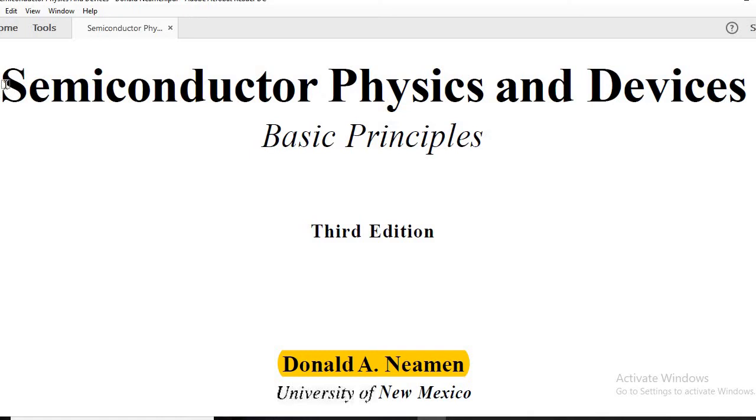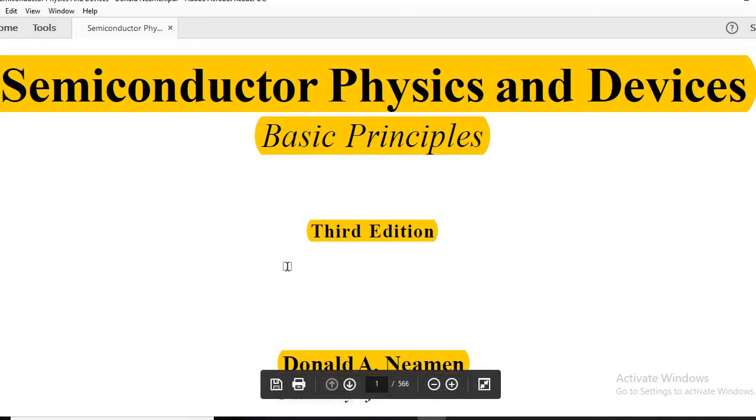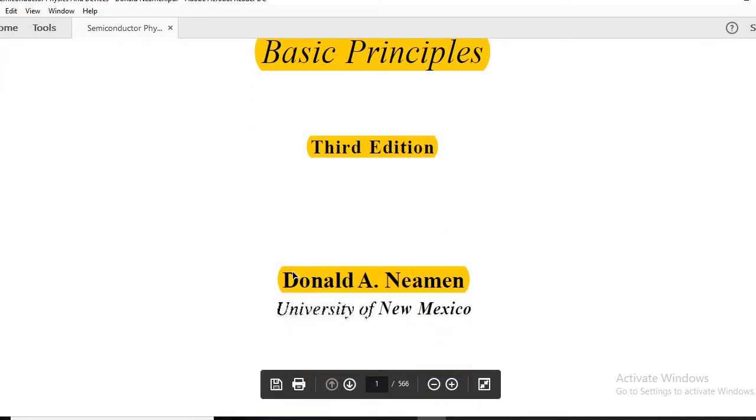You may have seen this time in 2018, so many questions taken out from these kind of books. This book is titled Semiconductor Physics and Devices, the basic principle. This is third edition. You may download it, it is available on Google. The author's name is Donald E. Neamen and he is from University of New Mexico.